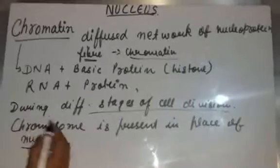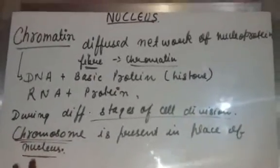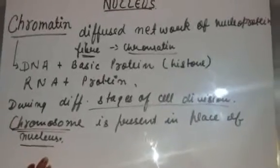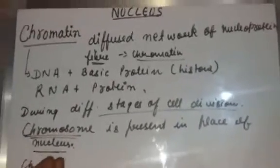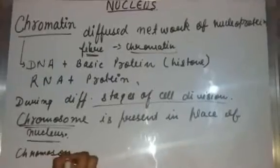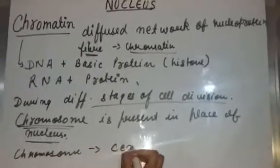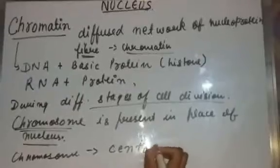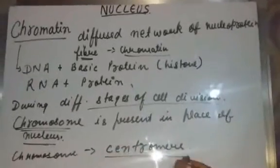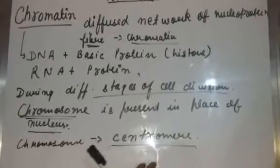In a chromosome, there is a constriction point called the centromere. Based on the position of the centromere, there are four types of chromosomes.